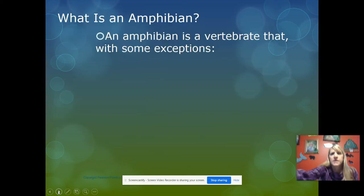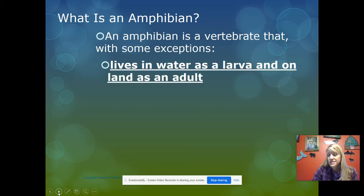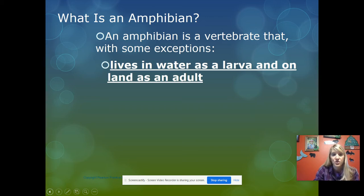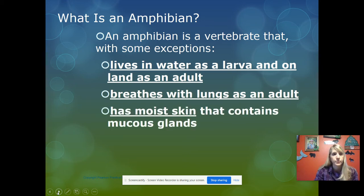An amphibian is a vertebrate — a chordate — that lives in water as a larva, like a tadpole, and on land as an adult. So they have two homes. They breathe with lungs as an adult, and obviously breathe with gills when they're in water as a larva.